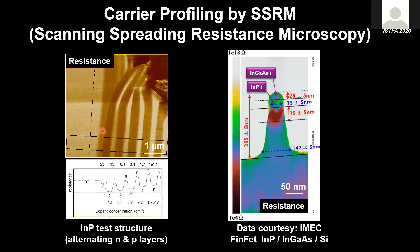If we apply SSRM on a sample with various dopants or carriers — alternating N-type and P-type, as in this indium phosphide test structure where the concentration decreases from 23 to 1 times 10^17 as we go from left to right — as the concentration decreases, the measured resistance nicely increases. It's a direct relation for both N-type and P-type, showing us the 2D distribution of carriers in that particular device.